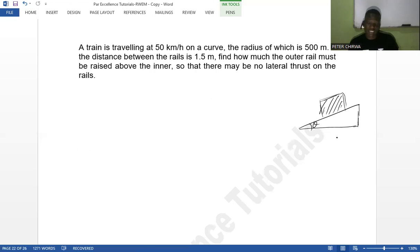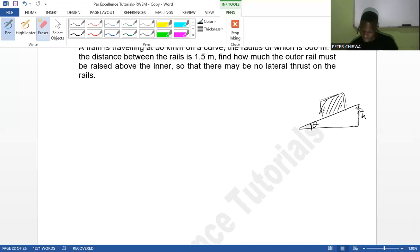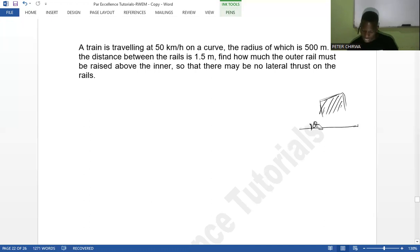So now we want to know how much it has to be raised, this outer part. What we want to know is the height h there, and we cannot know the height h without knowing what the angle theta is. We have also been told the distance between the rails. Actually this is supposed to look like this. The illustration is not perfect, so let me perfect it.